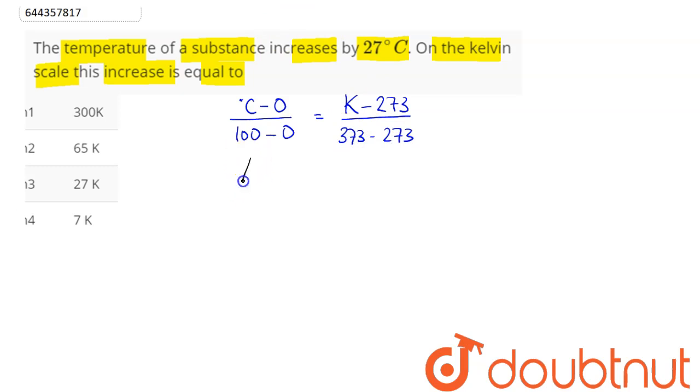So this can be written as delta C divided by 100 is equal to delta K divided by 100. Hence, 100 and 100 cancel out, so delta C is equal to delta K.